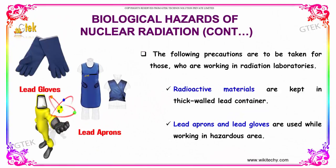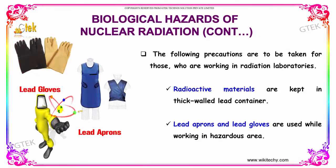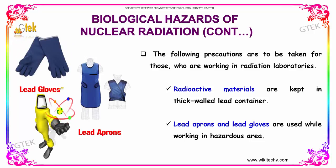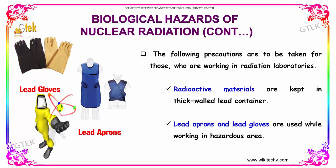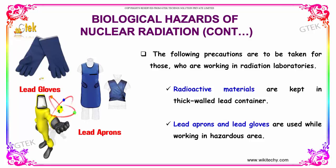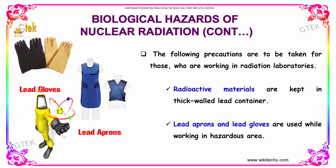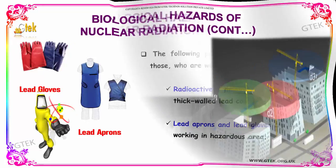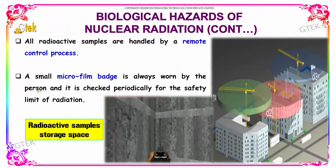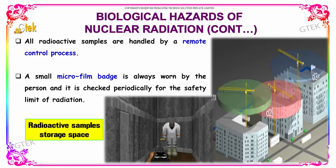The following precautions are to be taken by those working in radiation laboratories: radioactive materials are kept in thick-walled lead containers; lead aprons and lead gloves are used while working in hazardous areas; all radioactive samples are handled by a remote control process; and a small microfilm badge is always worn by the person and checked periodically for the safety limit of radiation.